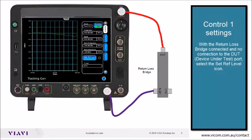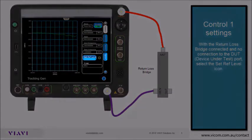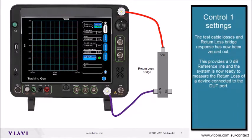With the return loss bridge connected and no connection to the DUT port, select the set reference level icon. The test cable losses and return loss bridge response has now been zeroed out, providing a 0 dB reference line. The system is now ready to measure the return loss of a device connected to the DUT port.